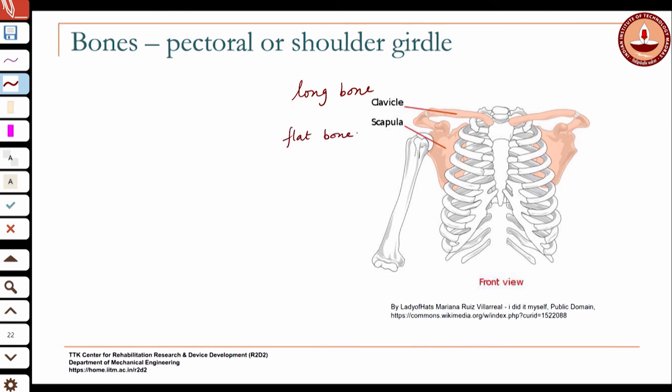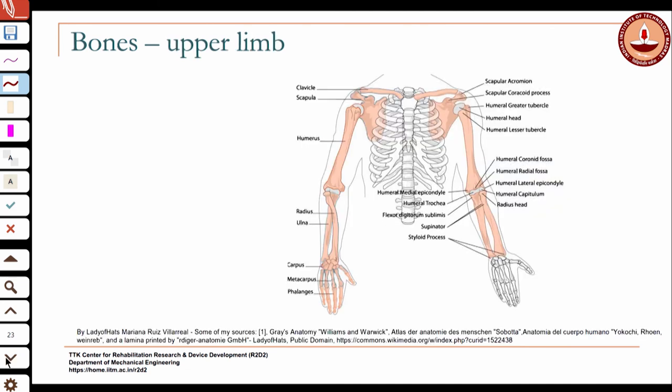The scapula provides a broad surface for muscle attachment. This is the shoulder girdle with the clavicle and the scapula. Then you have the other bones of the upper limb. I am repeating these so that you get very familiar with these bone names as we go along. You have the long bone which is the humerus — the upper arm — then you have the radius and the ulna.